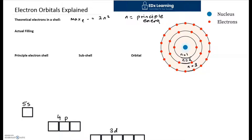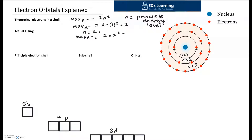When n equals 1, the max number of electrons is 2 times 1 squared, which is 2. You can see in the first principal energy level we have packed two electrons — that is a saturated first energy level. When n equals 2, the max number of electrons is 2 times 2 squared, which is 8. You can see a total of 8 electrons in the second principal energy level, which matches this formula.